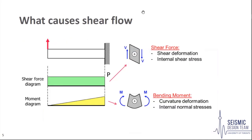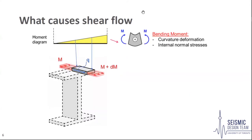If their magnitudes were not equal, the element would spin, as the parallel shear forces in opposite directions would generate moment couples making the element unbalanced. When an element is fixed in some way and subjected to a load, internal shear forces and bending moment forces are developed. We will be looking at bending moment as the primary cause for shear flow. As an element experiences bending moment along its length, the moment changes in magnitude, creating regions of higher and lower moments.